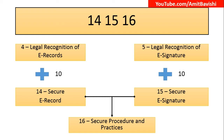So section 4 is legal recognition of e-records. Add 10 and we get 14, which is secure e-record. Section 5 is legal recognition of e-signatures. Add 10 and we get 15, which is secure e-signature. Now, sections 14 and 15 combined lead us to section 16 — secure procedures and practices. If the record is secure and the signature is secure, then the procedure and practices to issue or authenticate the electronic record must also be secure. That is section 16: secure procedures and practices.